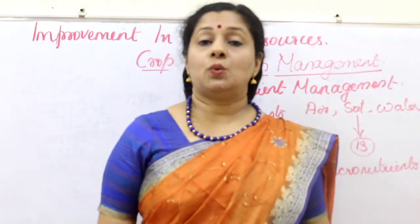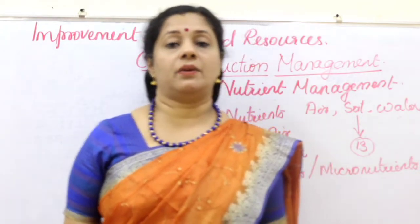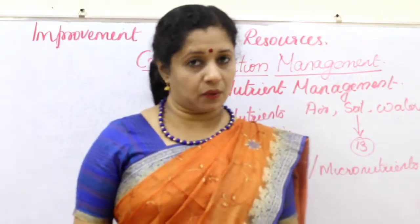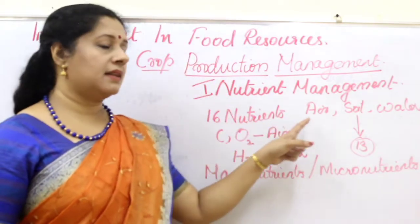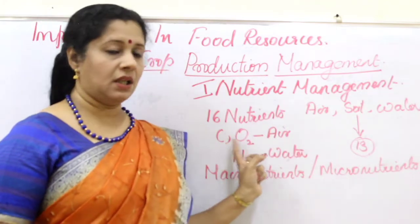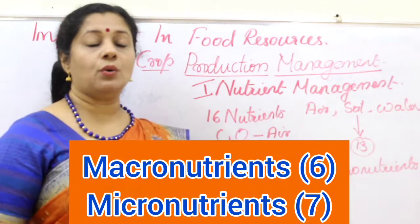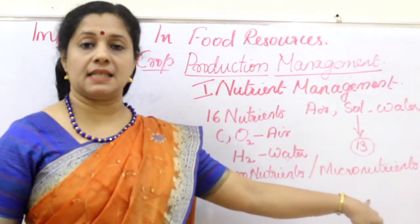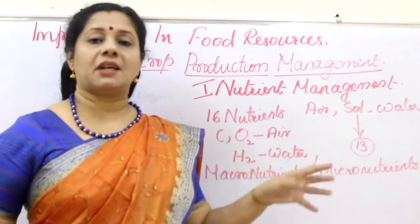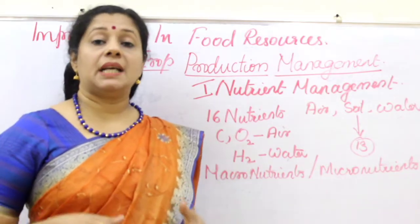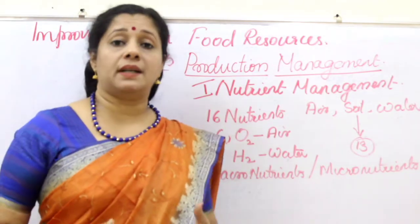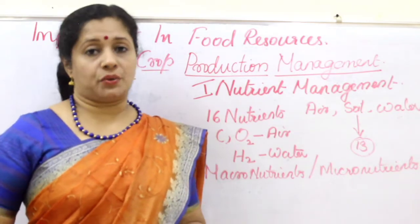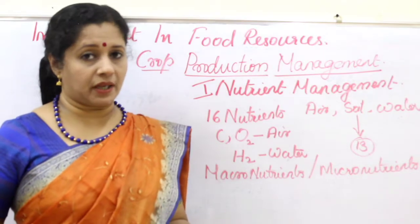There are two categories of nutrients: macronutrients and micronutrients. This is very important. Out of 16 nutrients, three are obtained from air and water. The remaining 13 are divided into macronutrients and micronutrients. Macro means big, micro means small — so nutrients required in large quantities by the plant are called macronutrients. There are six macronutrients.